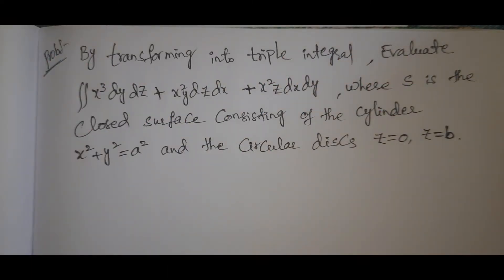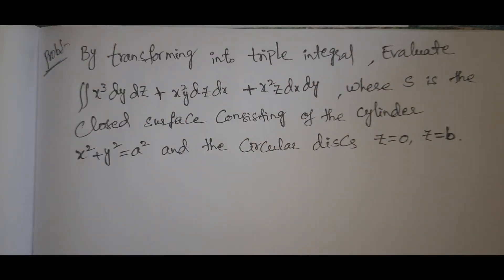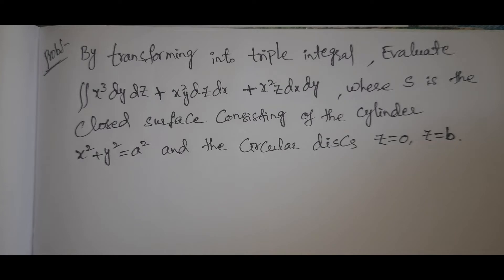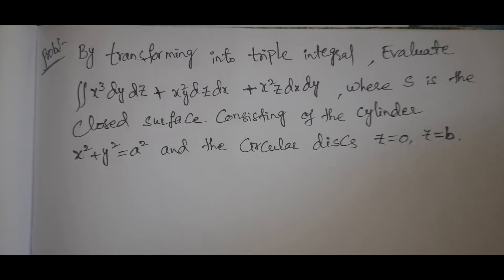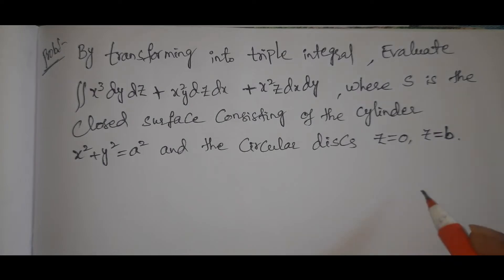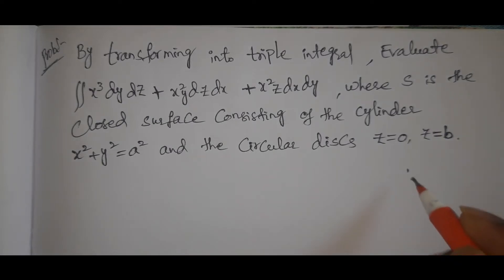Welcome to Rajesh Vekalu. Today our topic is the Gauss Divergence Theorem problem. We evaluate the double integral: x³ dy dz + x²y dz dx + x²z dx dy, where S is the closed surface consisting of the cylinder x² + y² = a² and the circular disks z = 0 and z = b.